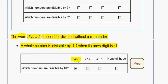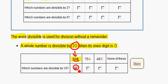Like in 840, it ends in 0. 754 does not, and 485 does not. So, the only number that is divisible by 10 is 840 because it ends in 0. So, we mark 840.